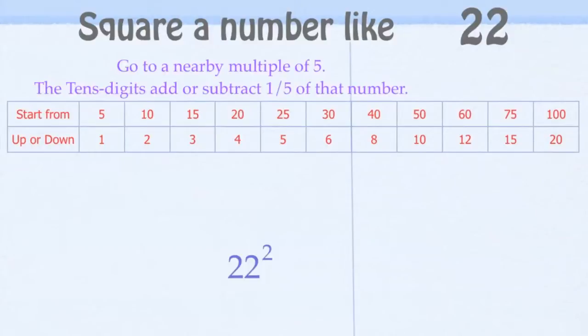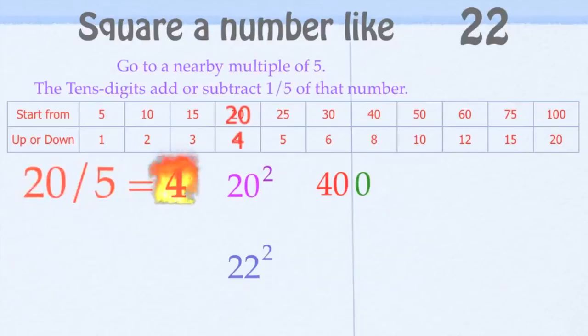We'll be adding or subtracting 1 fifth of that number. That's in the second row. So 20 squared is 400. That's easy. And then 20 divided by 5 is 4. So that's our key number here.